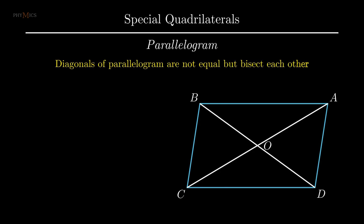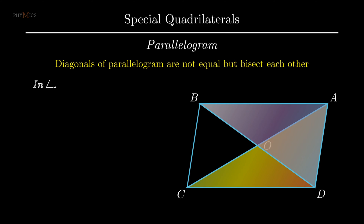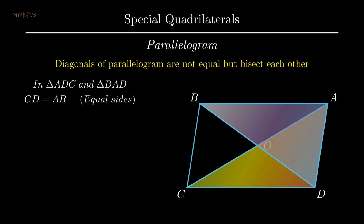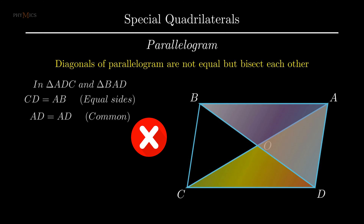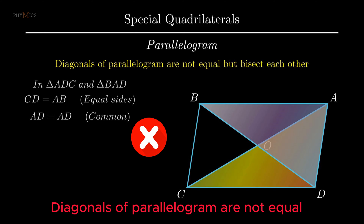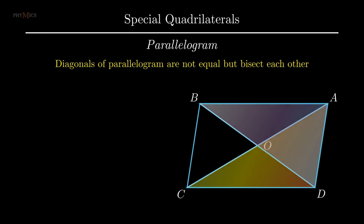To check the fact that diagonals of a parallelogram are not equal, consider triangle ADC and triangle BAD, which include diagonal AC and diagonal BD respectively. As opposite sides of a parallelogram are equal, side CD equals side AB, and AD is the common side to both triangles. From the figure, we are only able to prove two elements of the considered triangles equal, thus congruency conditions are not met and it can be concluded that the diagonals are not equal.